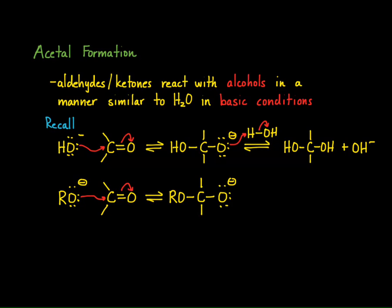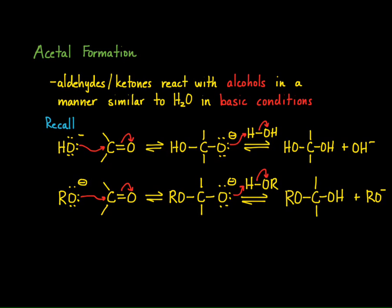This time you have created a new carbon-oxygen sigma bond, but the oxygen has some alkyl group attached to it instead of a hydrogen. And this can then be protonated by the alcohol instead of water. The result is a structure where instead of having two OH groups attached to the carbon, you have an OH and an OR — forming an ether functional group and an alcohol functional group on the same carbon. Notice we regenerate our alkoxide as well.